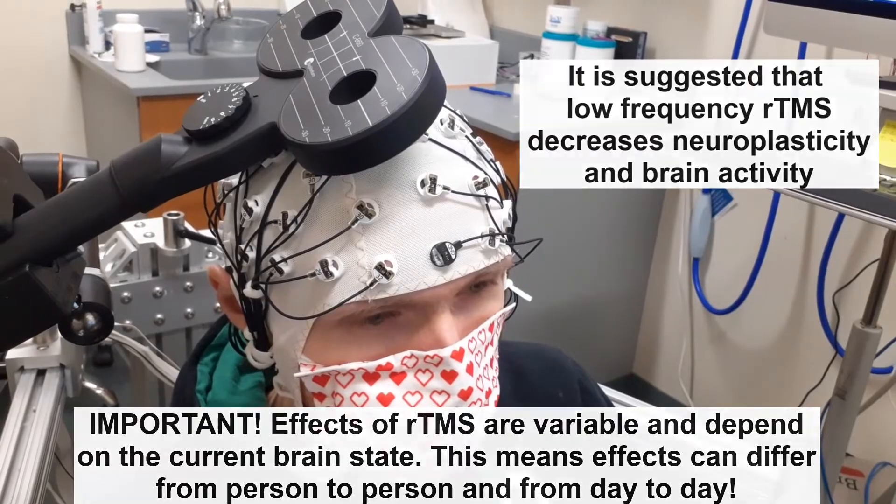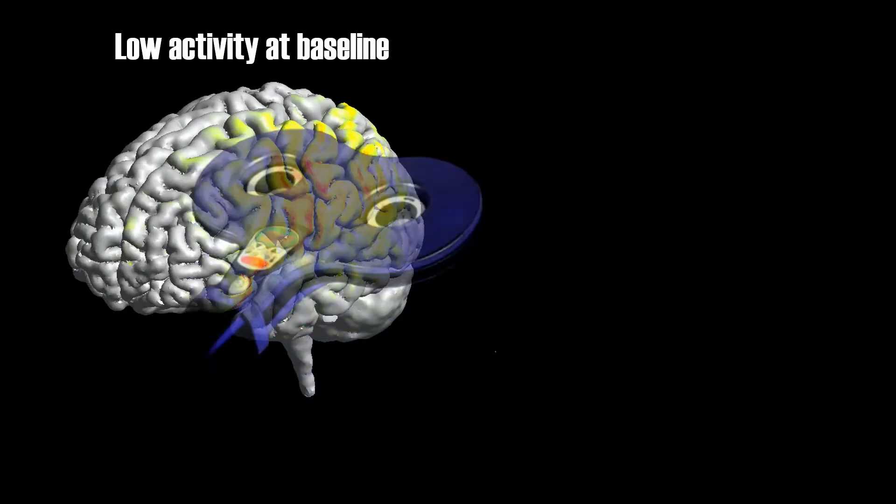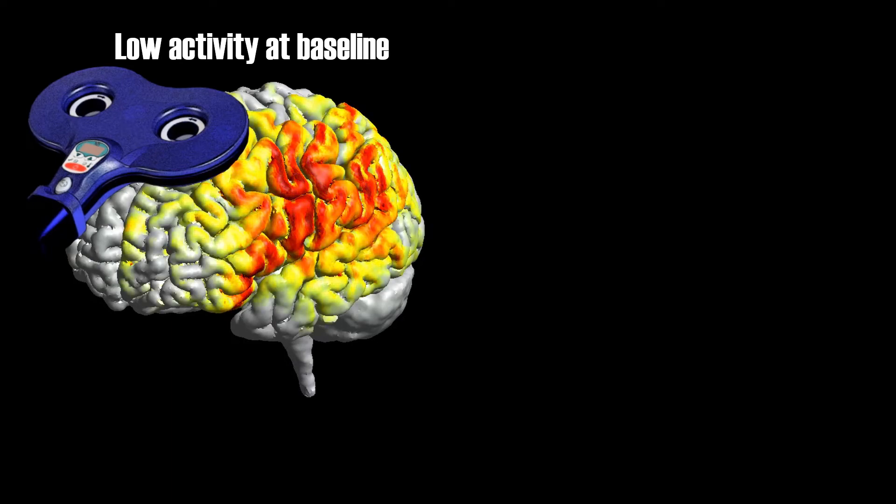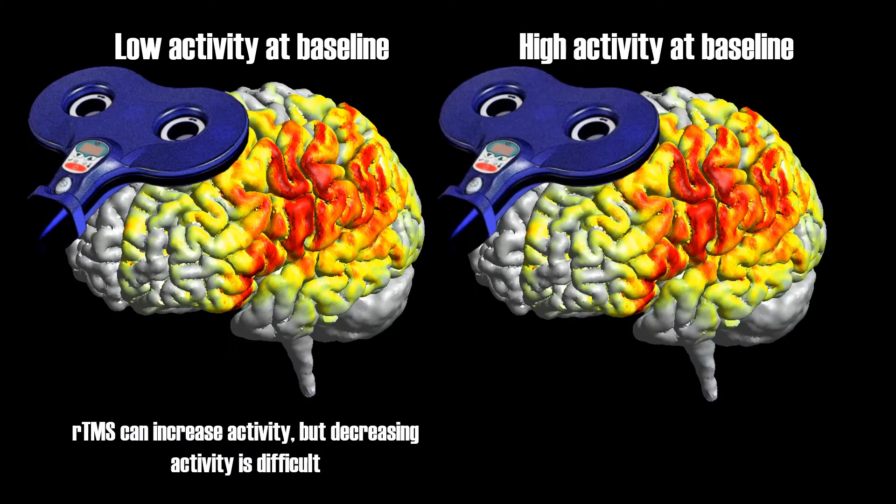Some studies have suggested that when baseline brain activity is low, it is easier to activate the brain, whereas if the baseline activity of the brain is very high, it is much easier to inhibit a brain region.